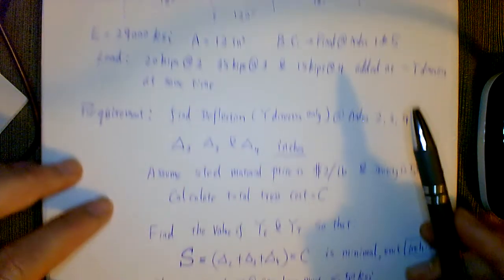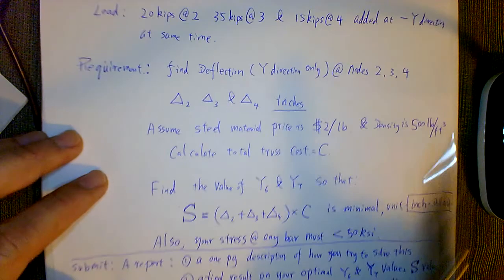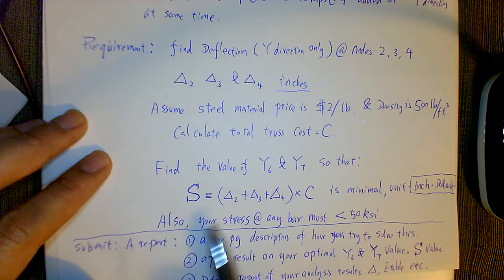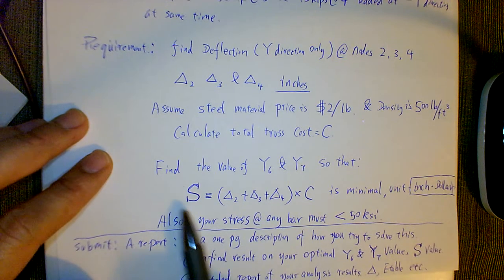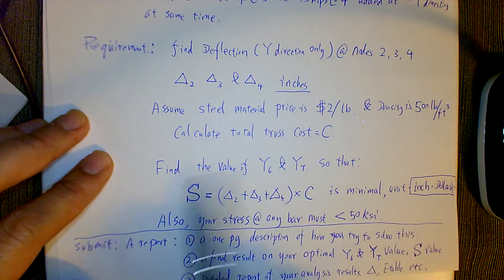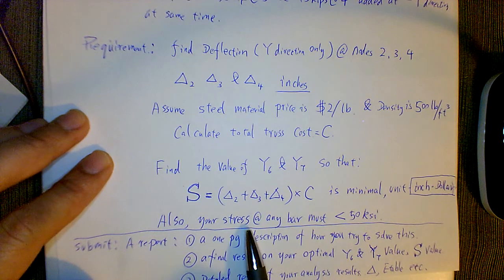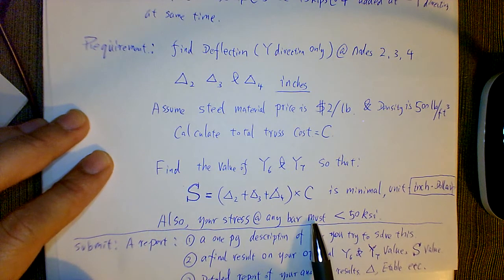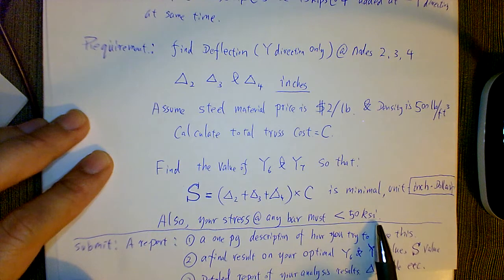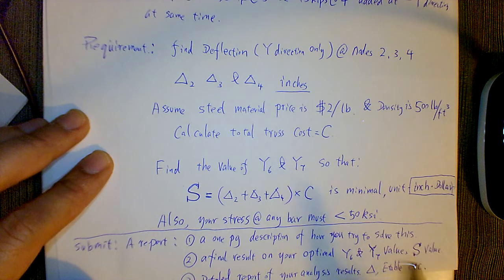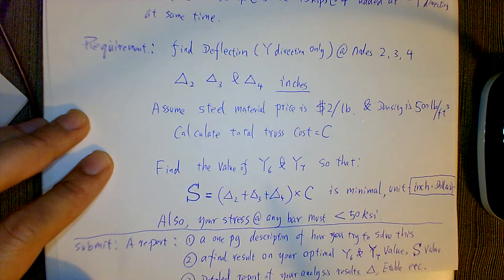At the same time, there's some other constraints. This is steel, right? Steel material—you need to do a check. Your stress at any bar cannot be exceeding 50 ksi. That's standard steel yielding, so don't exceed that.